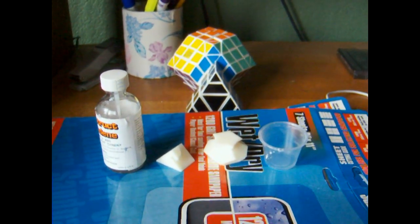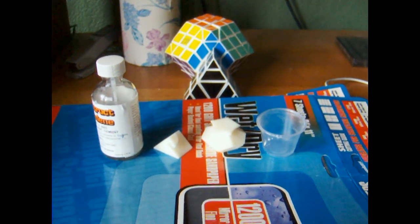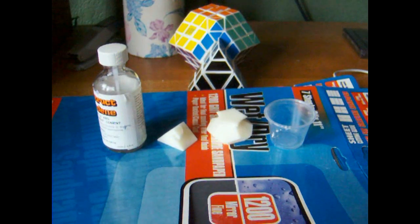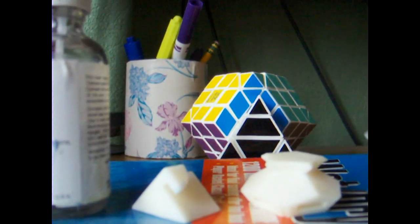In this tutorial you will be learning the process of smoothing a 3D printed master. When you first get your 3D masters they will have a texture of lines on them, and you need to remove all this texture before you make your mold.